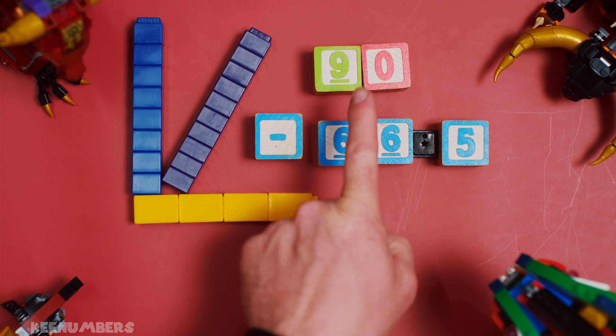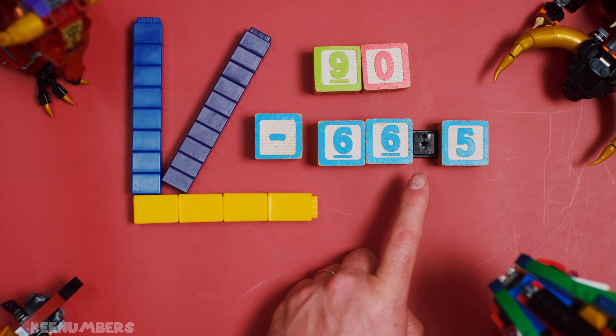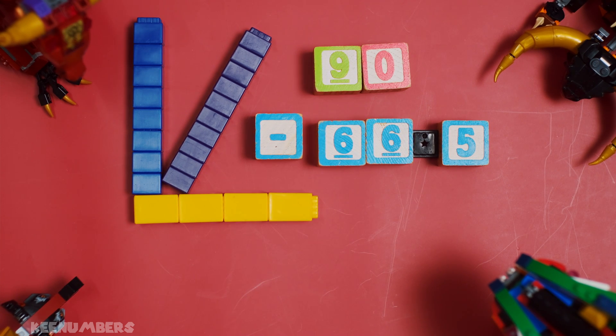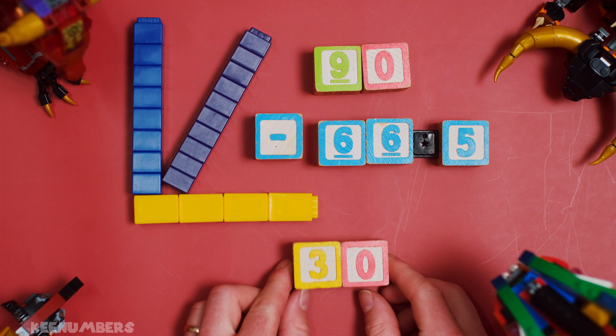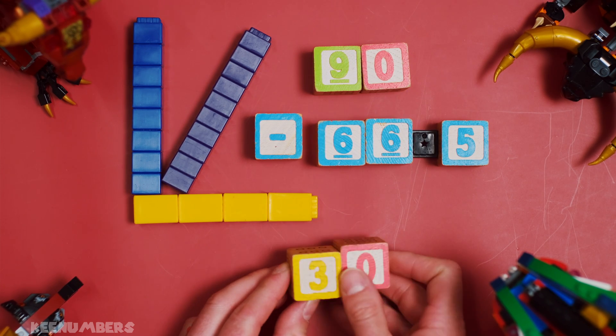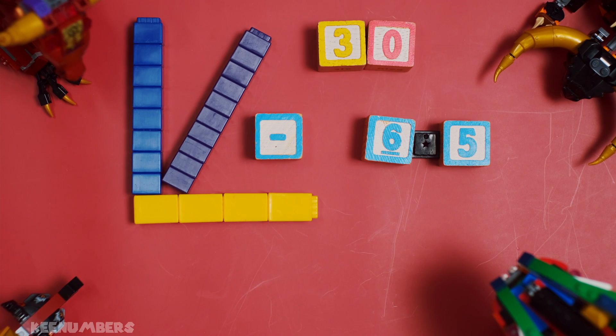Now, 90 minus 66 and a half. Don't get scared now. Nine minus six, that's going to give us simply three tens or 30, and then you're going to have minus 6.5. So what's 30 minus six and a half?